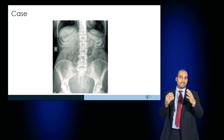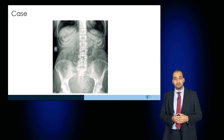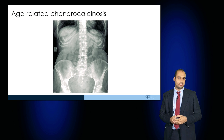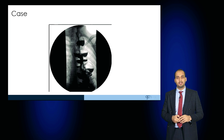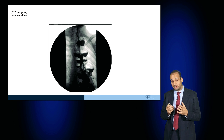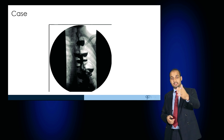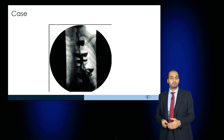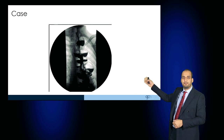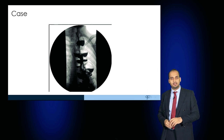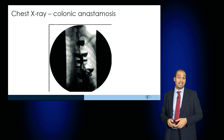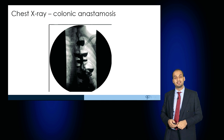This case is there for interest — you can see that the peripheries of the ribs look rather abnormal, but this is just age-related chondrocalcinosis. It's a normal finding in the elderly. This is an interesting image — this is the thoracic cavity as you can see the ribs, the left lung field and a small portion of the right lung field. But this middle connection, this oesophageal connection, looks like the colon — and actually this is a colonic anastomosis serving as a surrogate oesophagus.